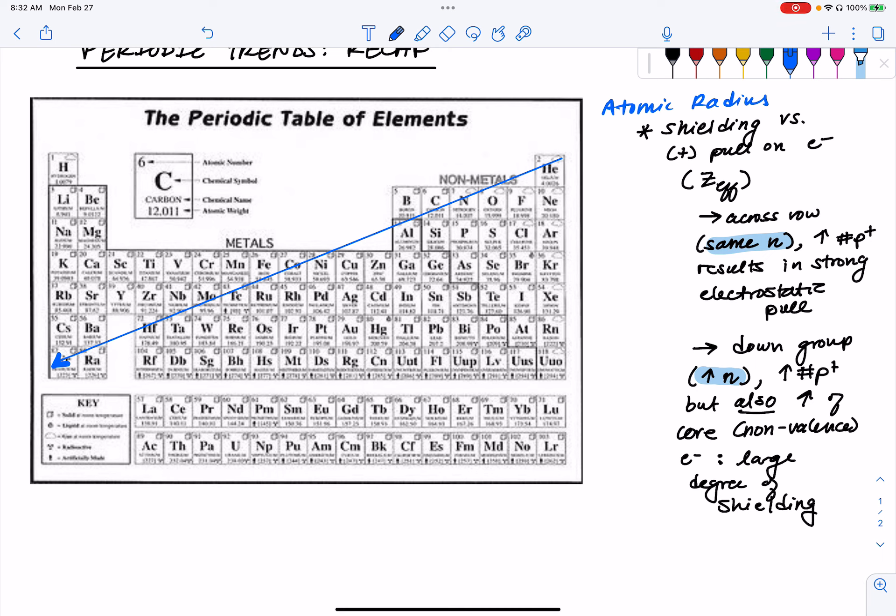So if we were to put that together into some kind of net trend, we would see here that this is increasing atomic radius where helium would be our smallest and francium, our largest.